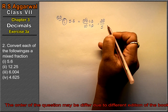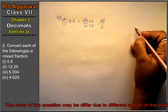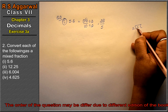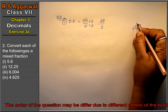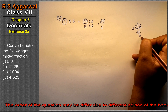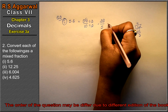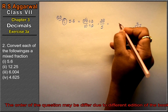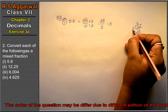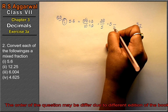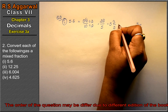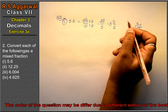Now divide 28 by 5 to get the mixed fraction. 5 times 5 is 25, remainder 3. So the whole number is 5 and the remainder 3 stays over 5. That gives us 5 and 3 upon 5 as the answer.